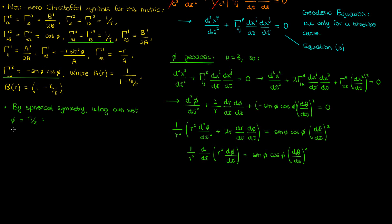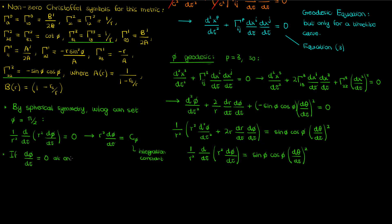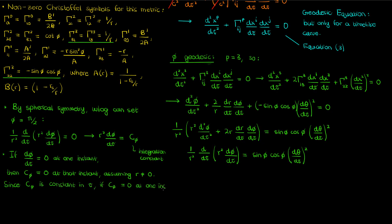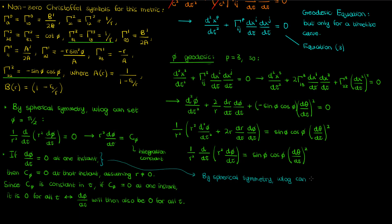We set φ = π/2 without loss of generality, just as we did when deriving Flamm's paraboloid. With cos φ = 0, we can drop the 1/r² factor and integrate both sides with respect to τ to get r² (dφ/dτ) = c_φ, where c_φ is an integration constant. If dφ/dτ = 0 at one instant and r > 0, then c_φ = 0 at that instant, and since c_φ is constant in time, dφ/dτ = 0 for all proper time.